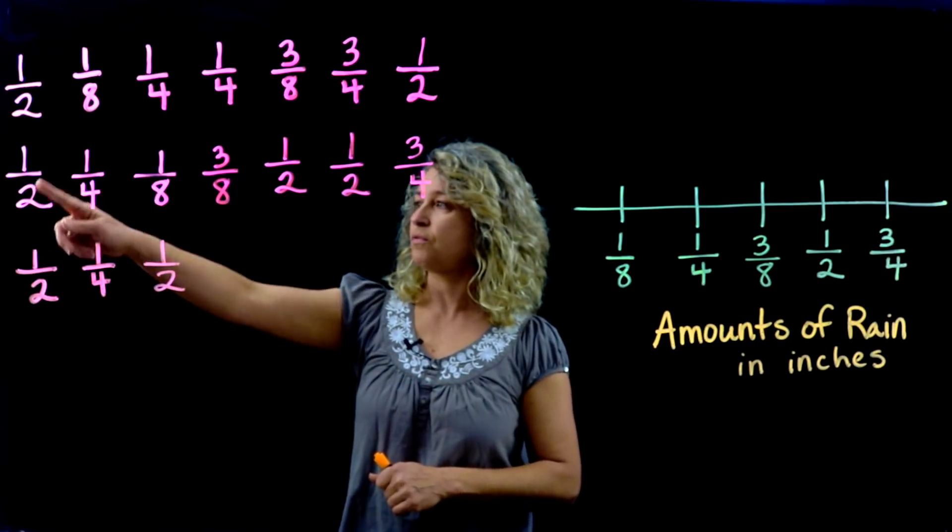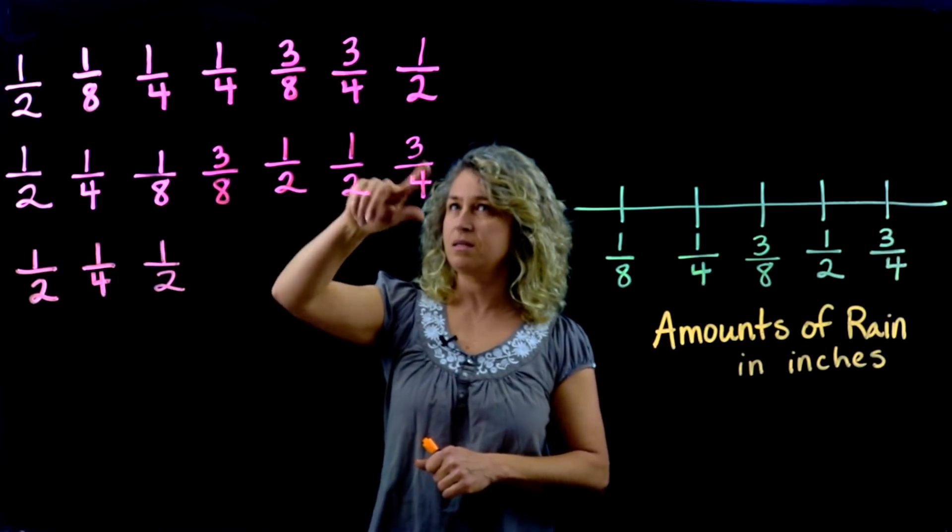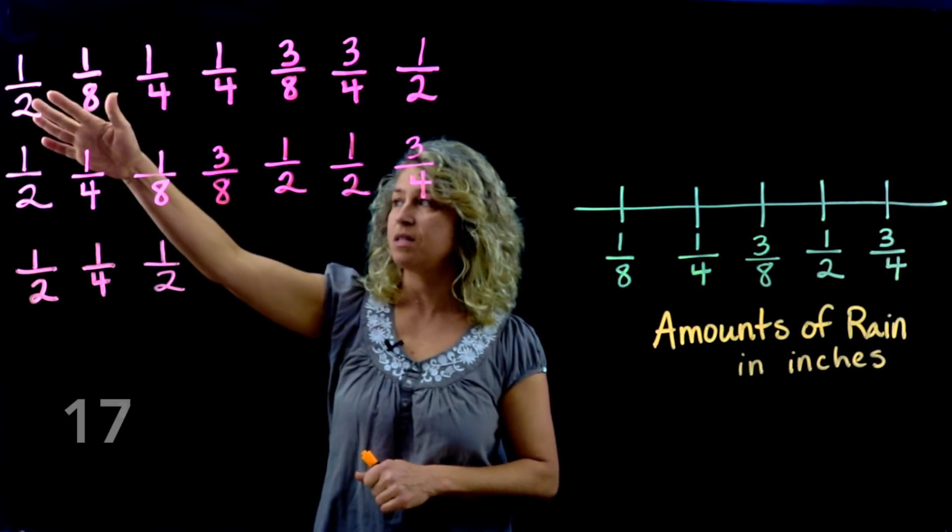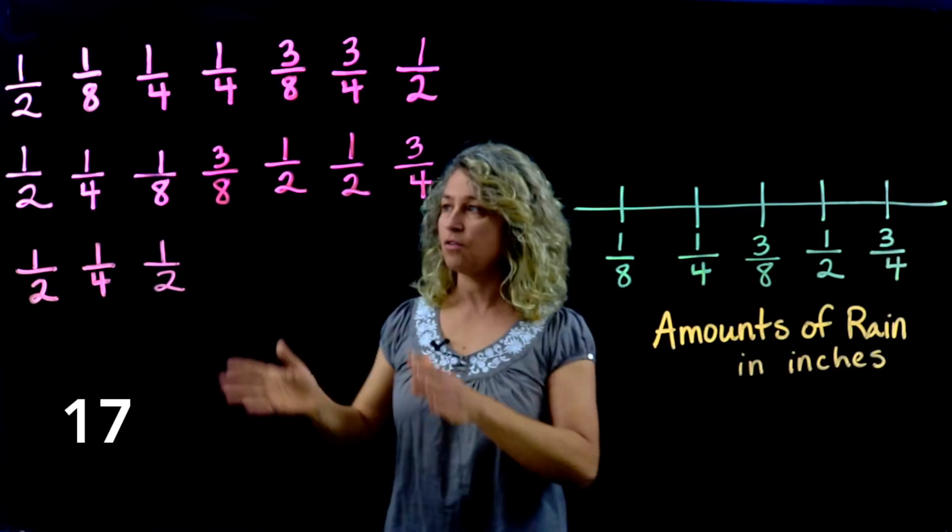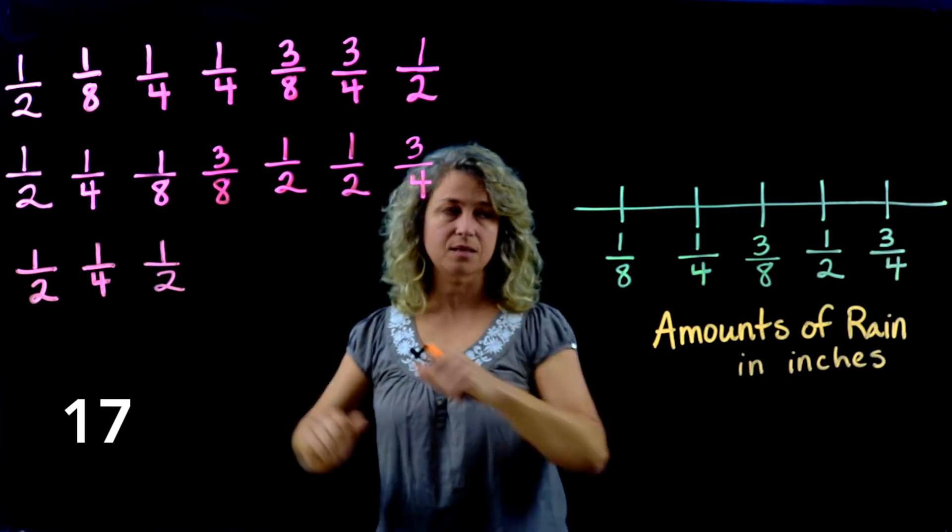First of all, notice how many points of data you have: 1, 2, 3, 4, 5, 6, 7, 8, 9, 10, 11, 12, 13, 14, 15, 16, 17. So here are the data points for 17 days.